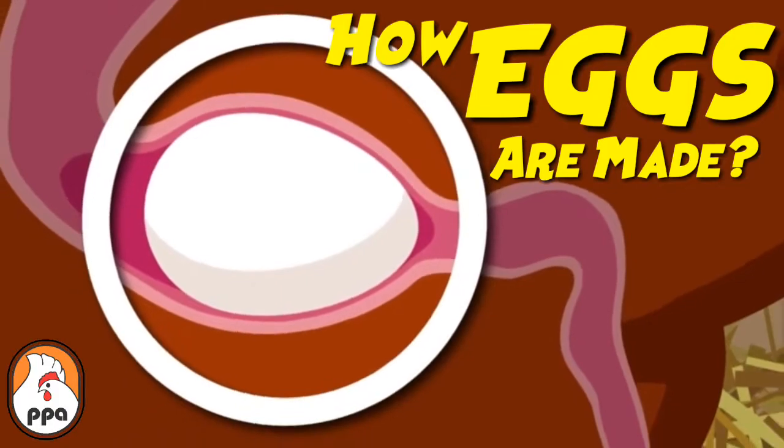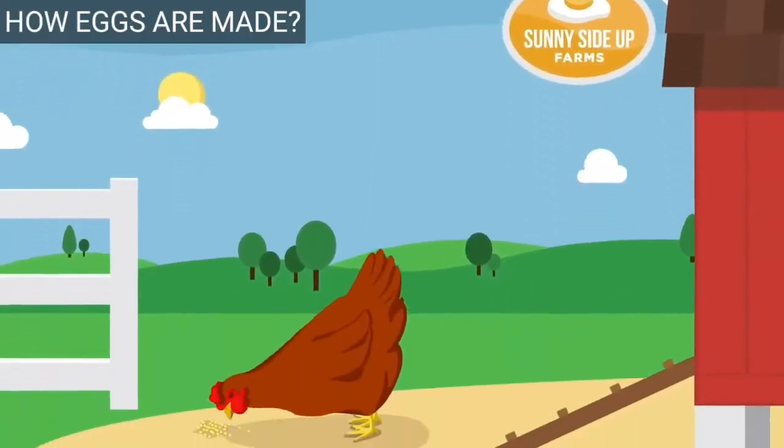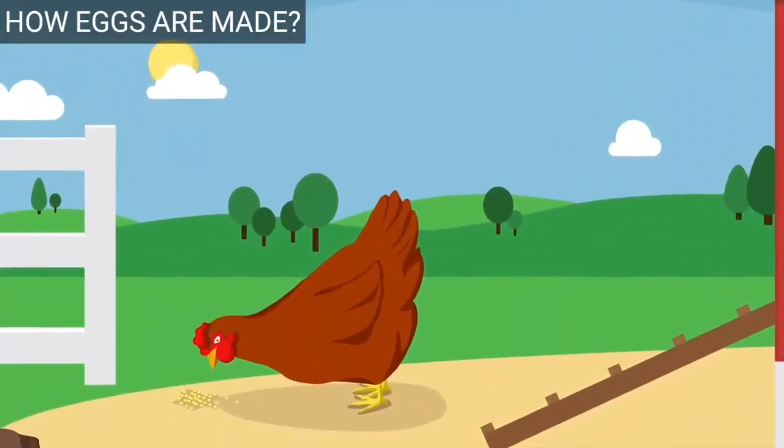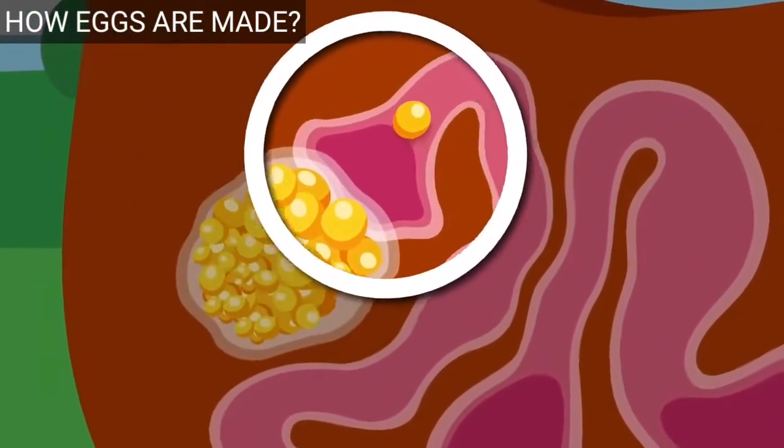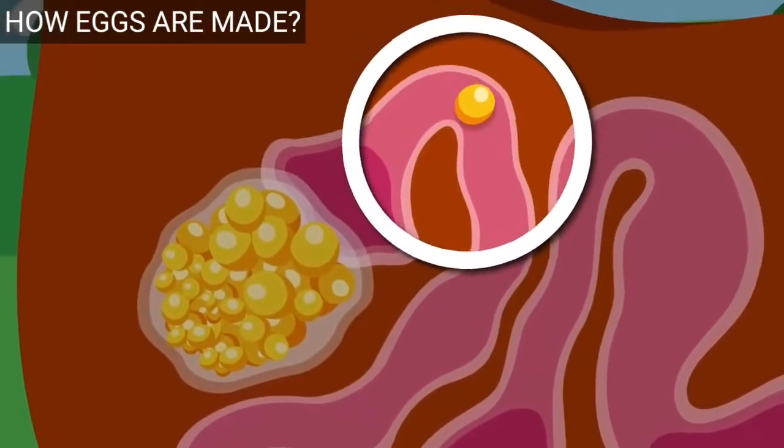From hen to table: how an egg is made. The journey of an egg starts when a yolk that contains the unfertilized ovum is released into the oviduct. If sperm is present, the egg will be fertilized. Remember, a hen doesn't need a rooster to lay eggs.